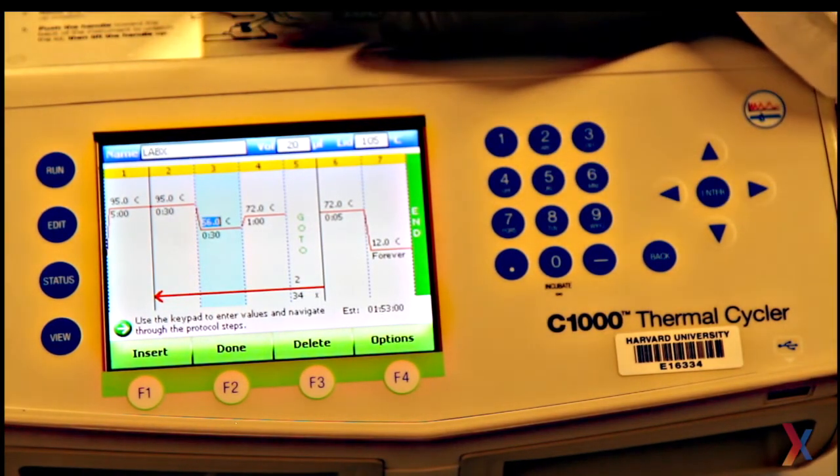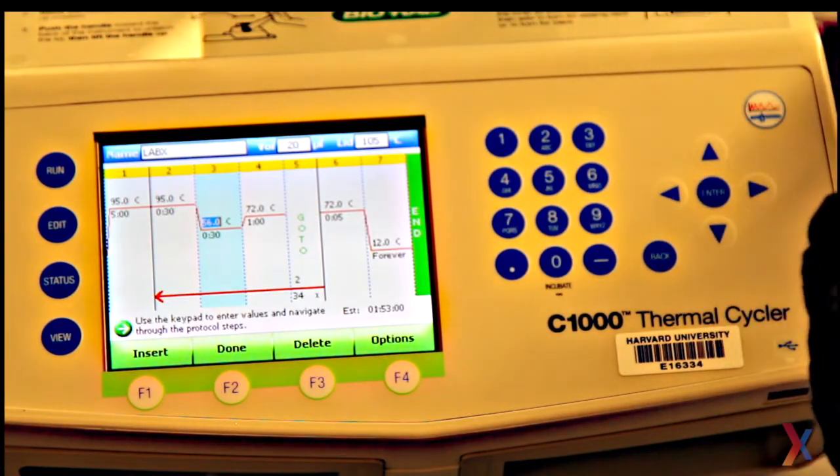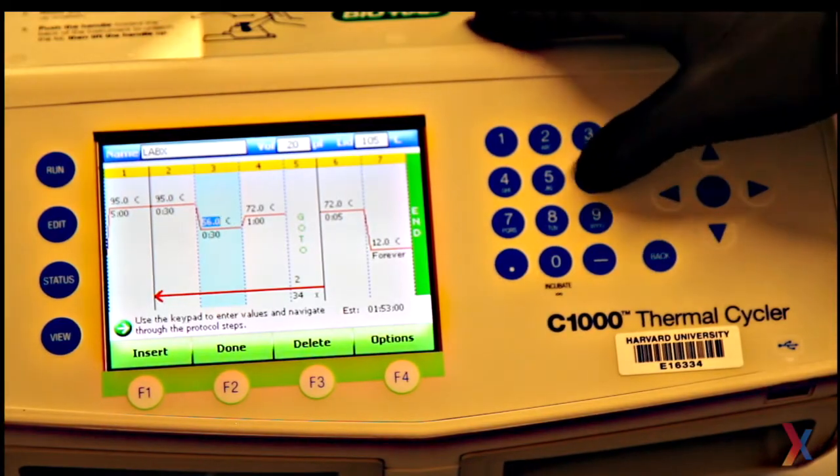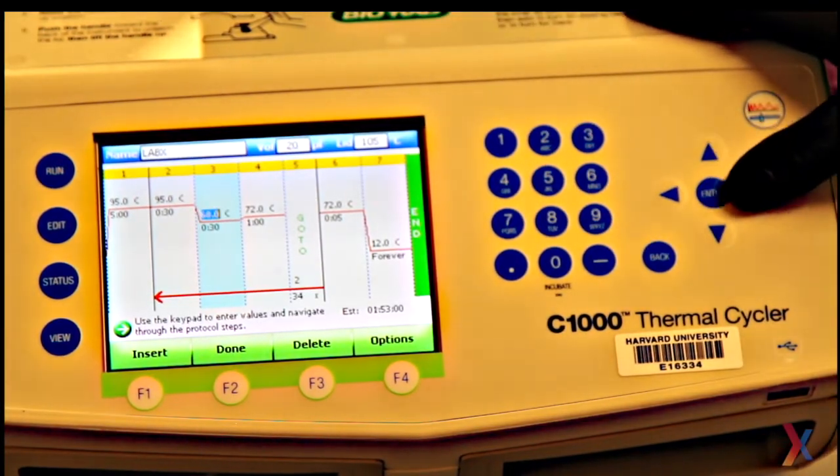Next is the annealing step. I'll calculate the temperature for this using the average of the TMs of each of my primers. So this will be at 68 Celsius for this primer pair, again for 30 seconds.